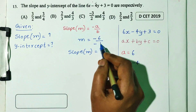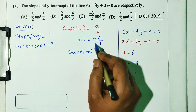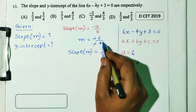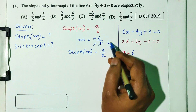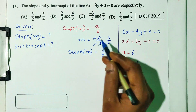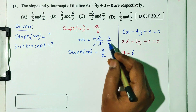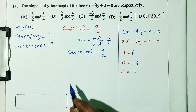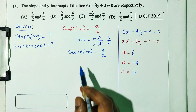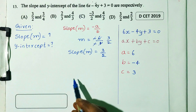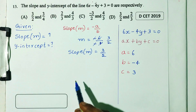The two negatives cancel, giving slope m equals 6 divided by 4, which simplifies to 3 by 2.